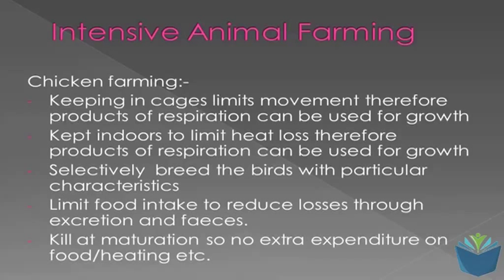Another method is to selectively breed the birds with particular characteristics. The characteristics we're talking about here would be a fast maturation rate, a fast growth rate, a high proportion of meat, and the quality of the meat. All of these things are taken into consideration when you selectively breed. You might start off with a group of chickens that are quite varied, but most farm chickens genetically are quite similar because they've been bred from a narrow gene pool, and therefore they exhibit similar characteristics.